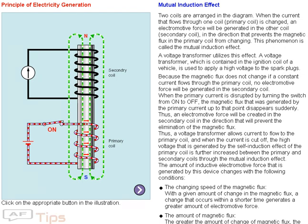A voltage transformer utilizes this effect. A voltage transformer, which is contained in the ignition coil of a vehicle, is used to apply a high voltage to the spark plugs. Because the magnetic flux does not change if a constant current flows through the primary coil, no electromotive force will be generated in the secondary coil. When the primary current is disrupted by turning the switch from on to off, the magnetic flux that was generated by the primary current up to that point disappears suddenly. Thus, an electromotive force will be created in the secondary coil in the direction that will prevent the elimination of the magnetic flux.